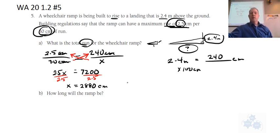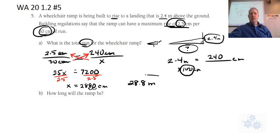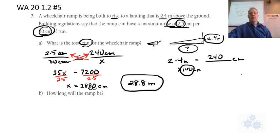So that's in centimeters. We can now change that to meters. How do you change centimeters to meters? Divide by 100 — very good. Dividing by 100 moves the decimal place back two times. So this ramp has to be 28.8 meters long. So that's part A.